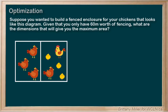First, you want to draw and label a diagram if possible, especially if the question involves geometry or shapes. Our chicken pen looks like this, and we know that there are two different side lengths that we need to find. Let's label them L for length and W for width. Second, what function are we trying to maximize? Well, we want to maximize the area. For a rectangle like this, that's the length times the width, so we are trying to maximize A equals L times W.